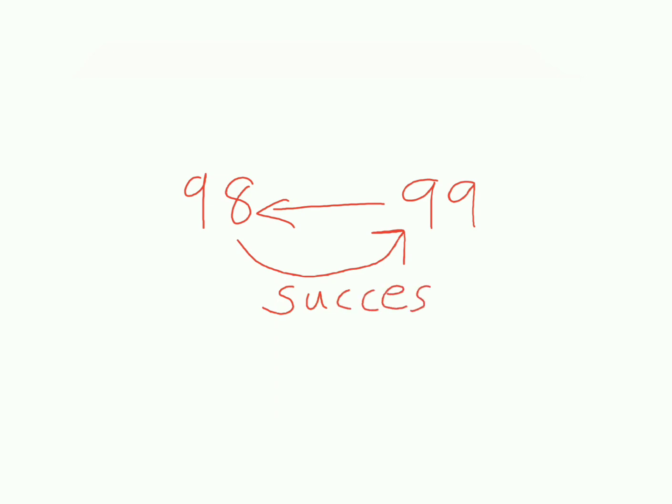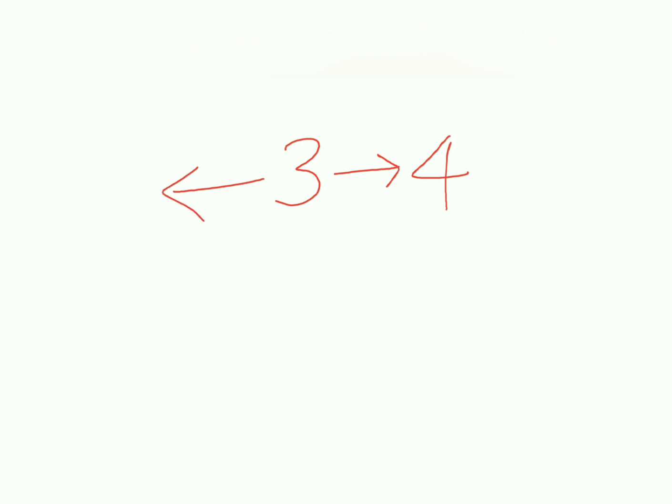How will we get the predecessor? We should subtract 1 from the given number. Then we will be getting the predecessor of the particular number. Take number 3. The successor of number 3 is 4. And how will we find the predecessor of number 3? Just subtract 1, you will be getting 2. 3 minus 1, you will be getting 2. Then 2 is the predecessor of 3.